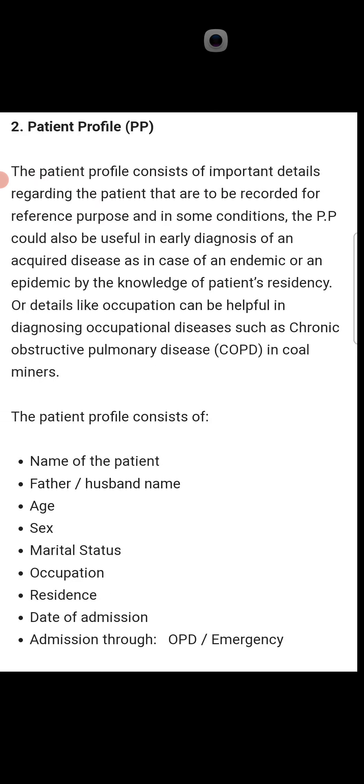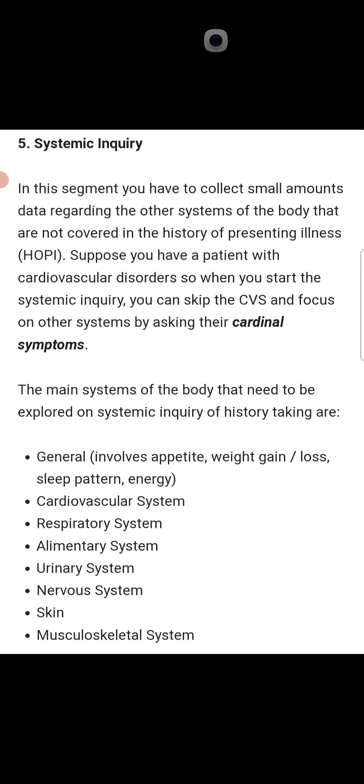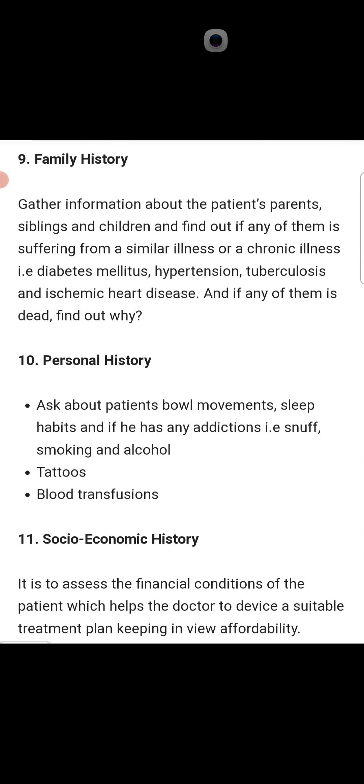After treatment history comes family history. In family history, get information about the patient's parents, siblings, and children, and find out if any of them is suffering from a similar illness or a chronic illness — for example, diabetes, hypertension, tuberculosis, or ischaemic heart disease, since these run in families. If any family member has died, find out why, as it may be a similar problem to what the patient is suffering from.